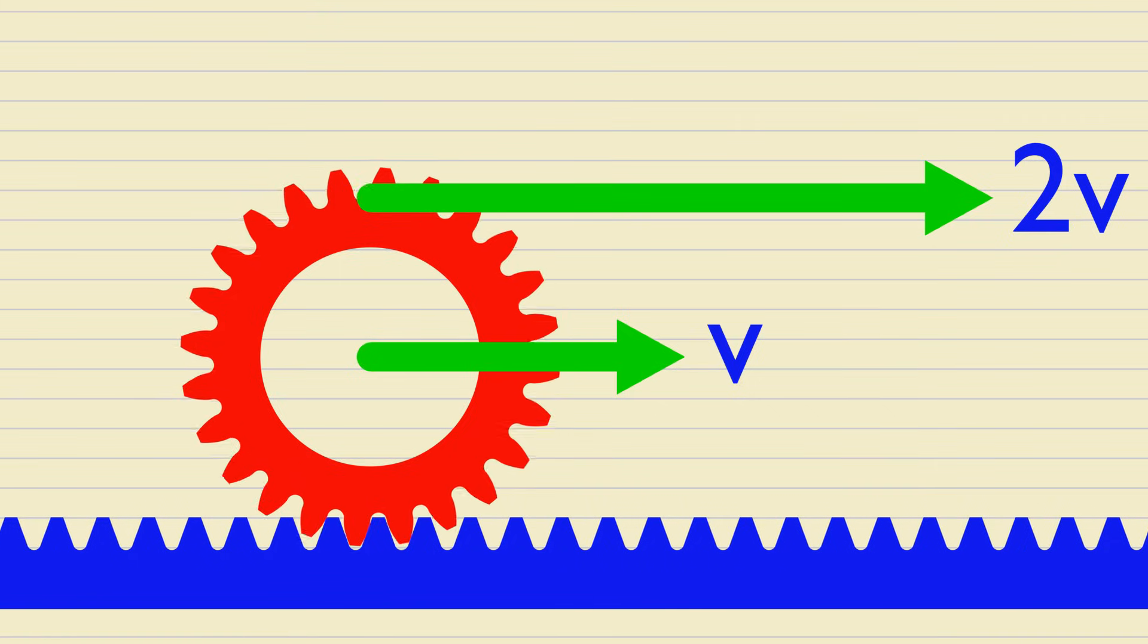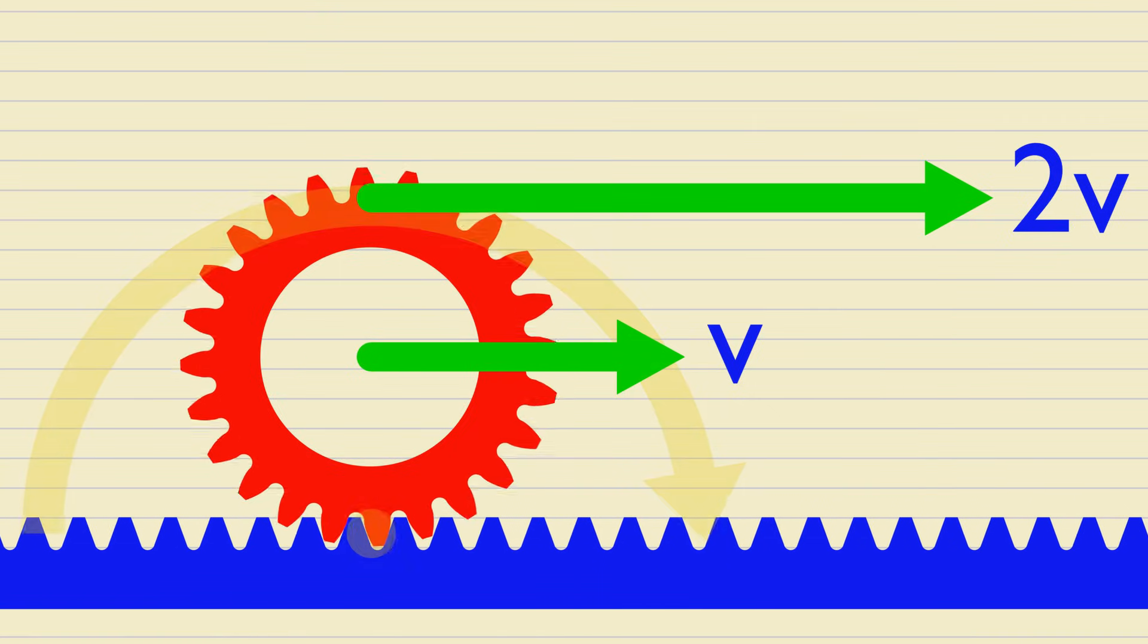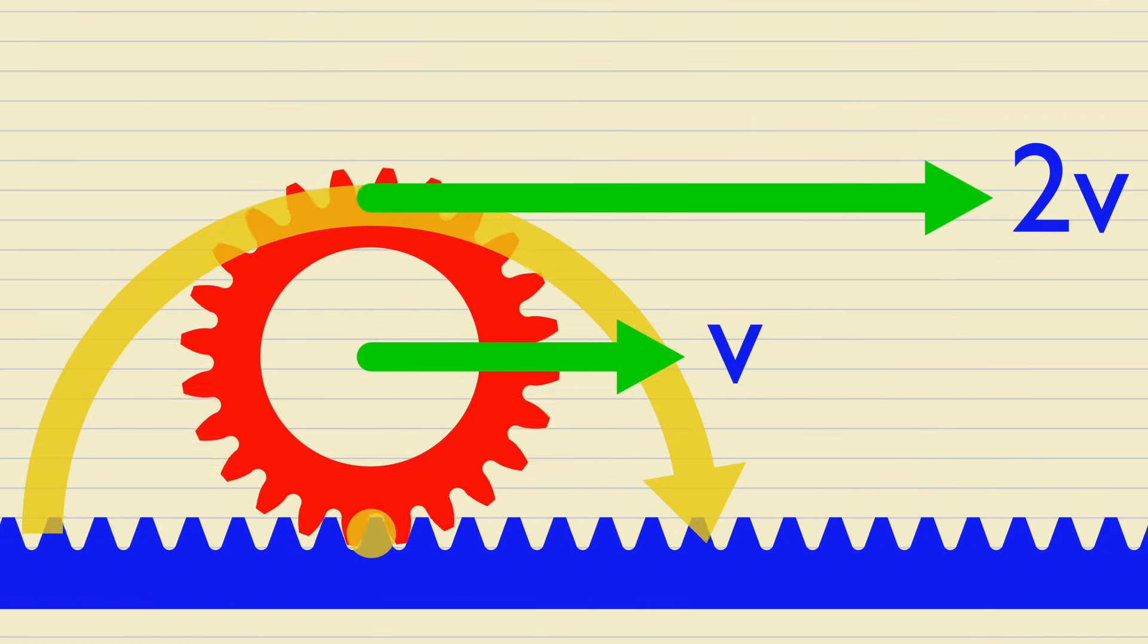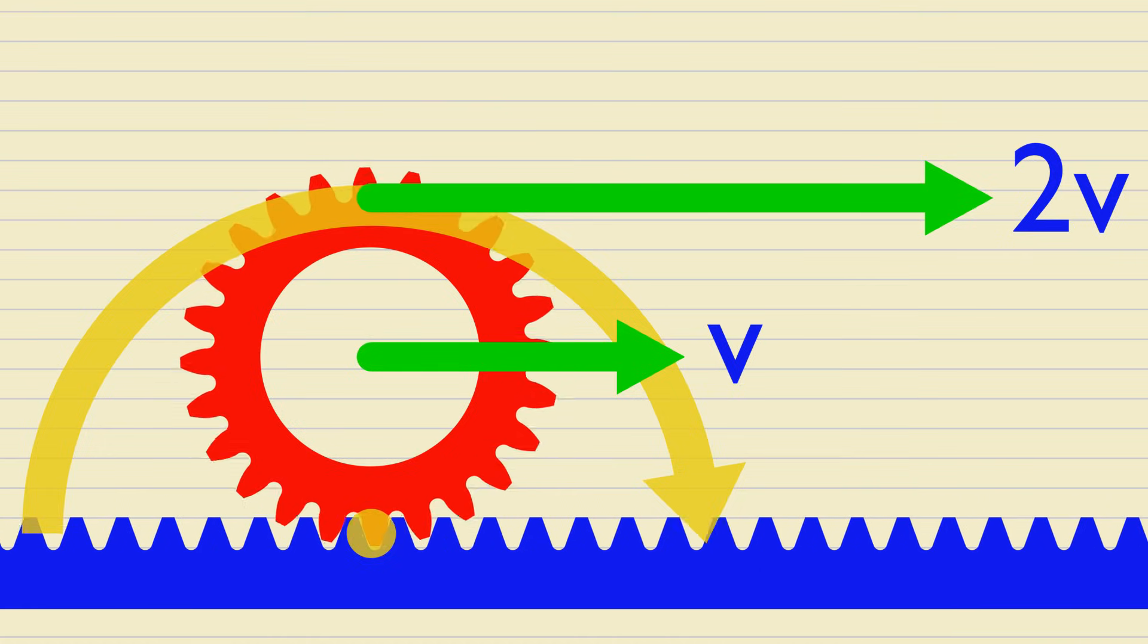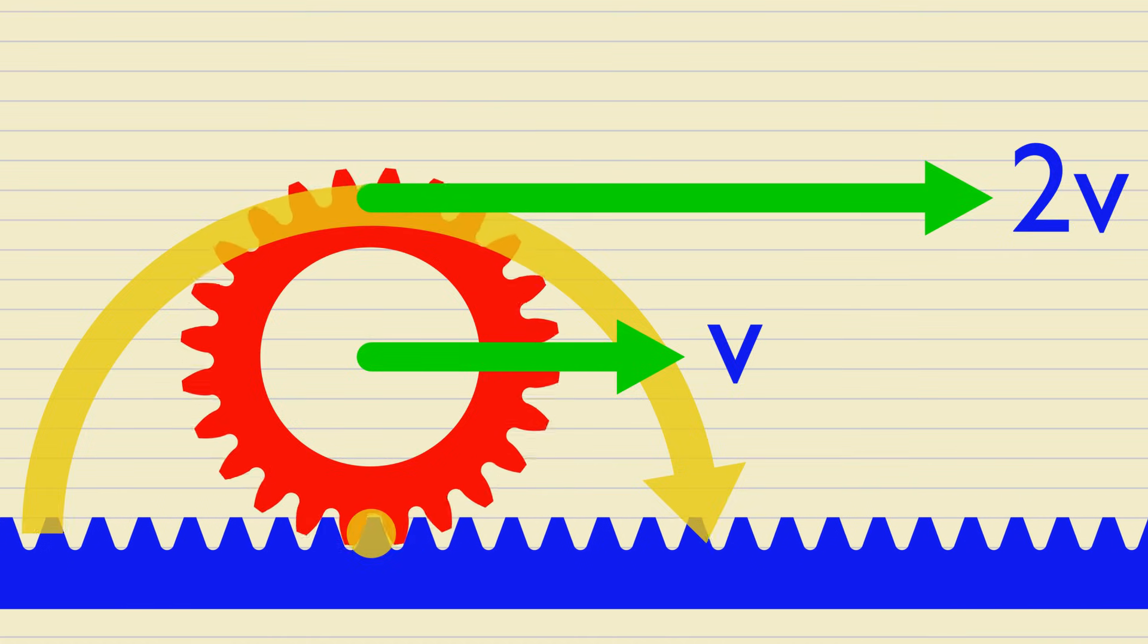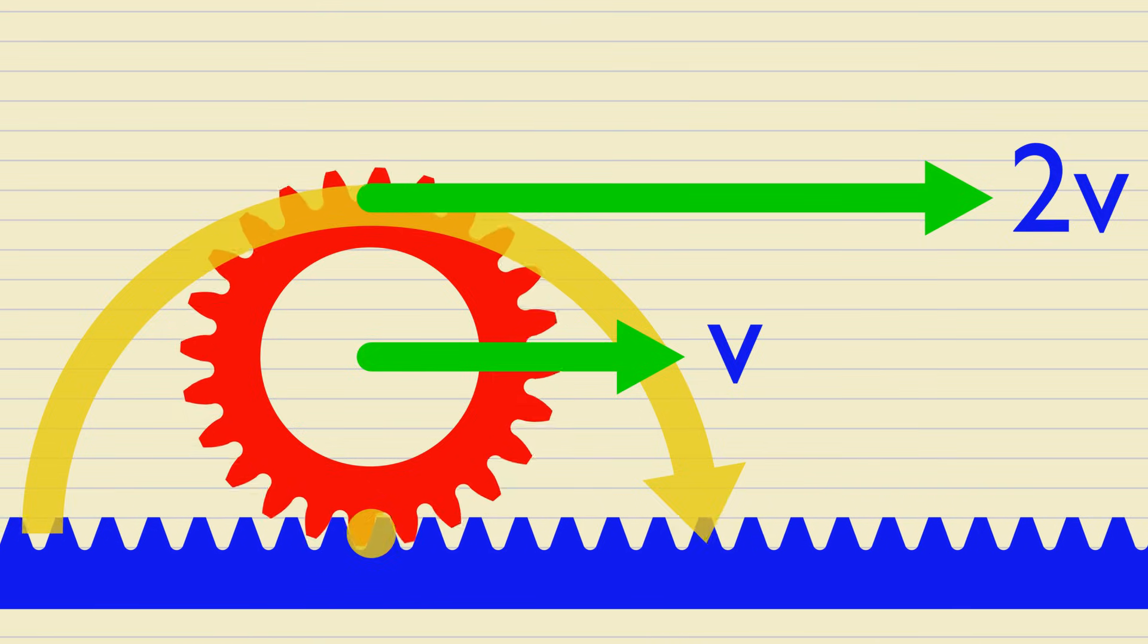That is because the rolling can be viewed as an instantaneous rotation around the point where the wheel touches the ground. Since the top point of the wheel is twice as far from that point than the wheel center, the linear velocity is also twice as great.